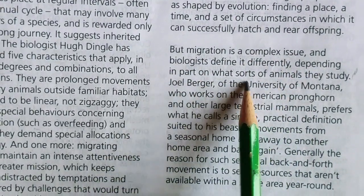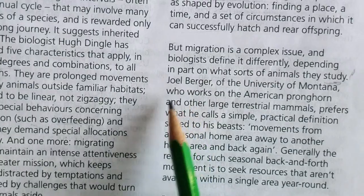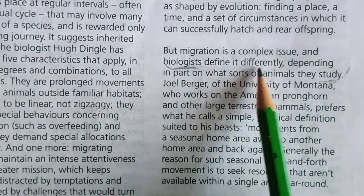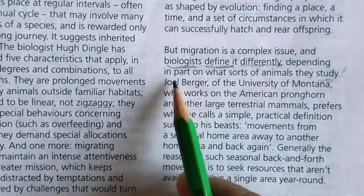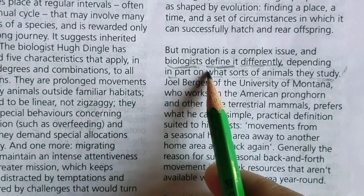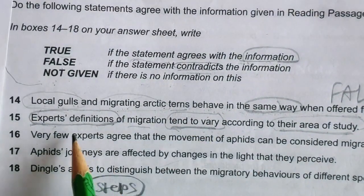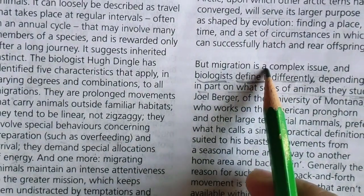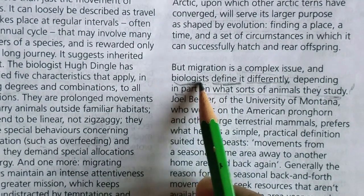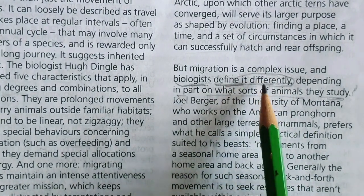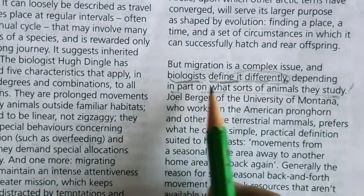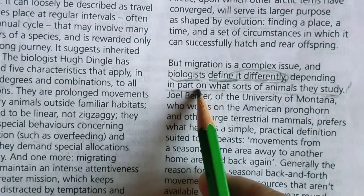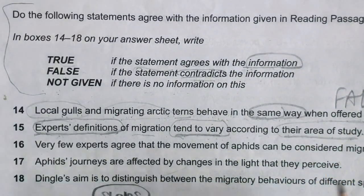In the passage: 'Migration is a complex issue and biologists define it differently, depending in part on what sorts of animals they study.' This perfectly matches the question: 'experts define it differently' equals 'tend to vary,' and 'depending on what sorts of animals they study' equals 'according to their area of study.' The answer is TRUE.